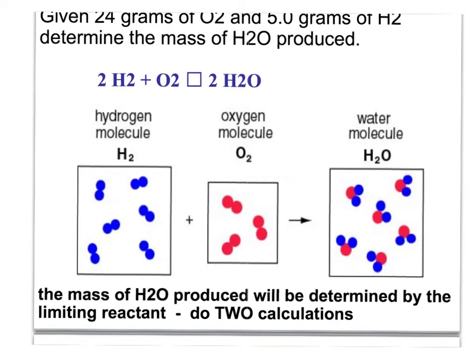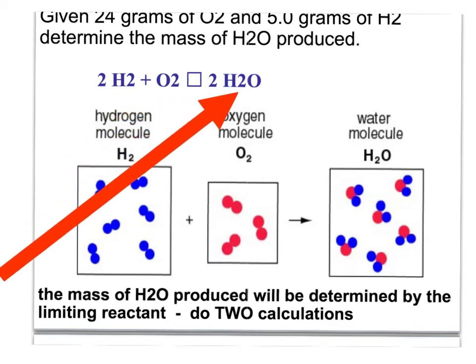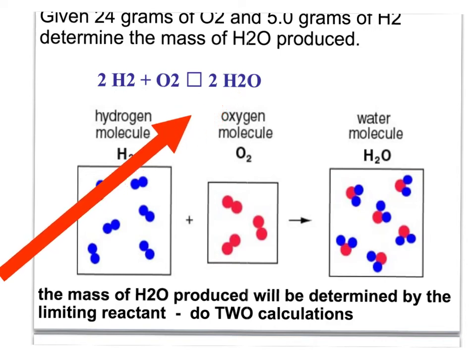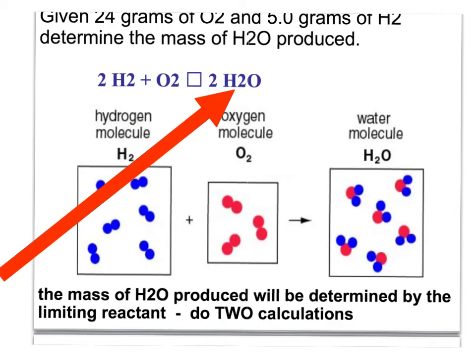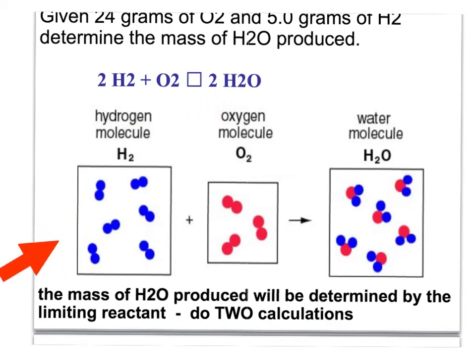Here we see the reaction: two moles of H₂ plus one mole of O₂ yields two moles of water. We're going to determine this by doing two gram-to-gram calculations. Starting with hydrogen and oxygen and producing water, we're going to change hydrogen to water and oxygen to water, and then compare both of those to see what's limiting.